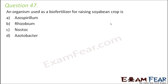Question number 47: An organism used as a biofertilizer for raising soybean crop is — (A) Azospirillum, (B) Rhizobium, (C) Nostoc, or (D) Azotobacter. Soybean is a leguminous plant, and for legumes one of the best biofertilizers is the nitrogen-fixing bacteria present in root nodules — that is Rhizobium. Rhizobium forms nodules in the roots of leguminous plants, fixes atmospheric nitrogen, and nitrogen is a macronutrient for plant growth.